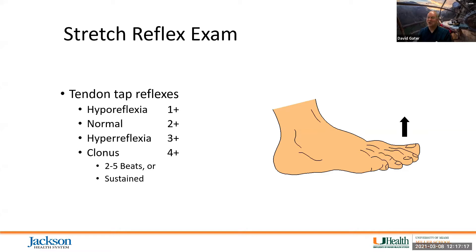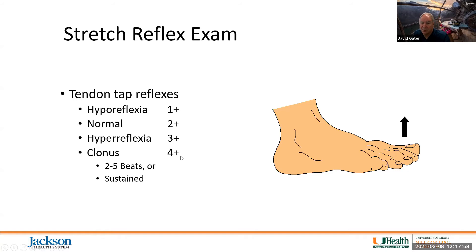Reflexes are checked at: S1 (ankle jerk), L2-3-4 (quadriceps/patellar knee jerk), C5 (biceps), C6 (brachioradialis or extensor carpi radialis longus and brevis), and C7 (triceps). We report each reflex as zero (no response), one-plus (diminished), two-plus (normal), three-plus (brisk), up to four-plus (with clonus).